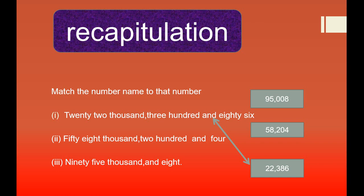We will check the numbers. The first number is 95,008 and the second one is 58,204. So we will join the second number name to the second number. And the last one, 95,008 — that is the first number. So we join them.